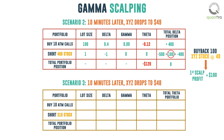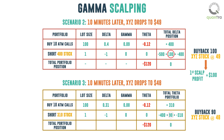Scenario 3: 10 minutes later, XYZ drops to $48. The new Delta is now 0.31, the new Gamma is 0.08, and the Theta is minus 0.12. To maintain your Delta hedge, you now need to be short on 310 XYZ stocks. Hence, you buy back 90 XYZ at $48, thus pocketing a profit of $180. This is your second scalp.